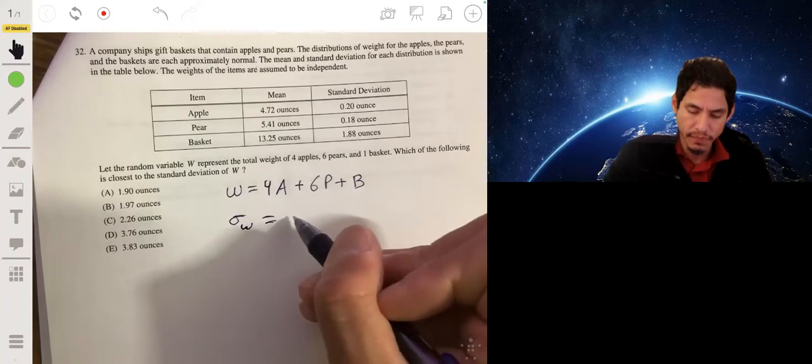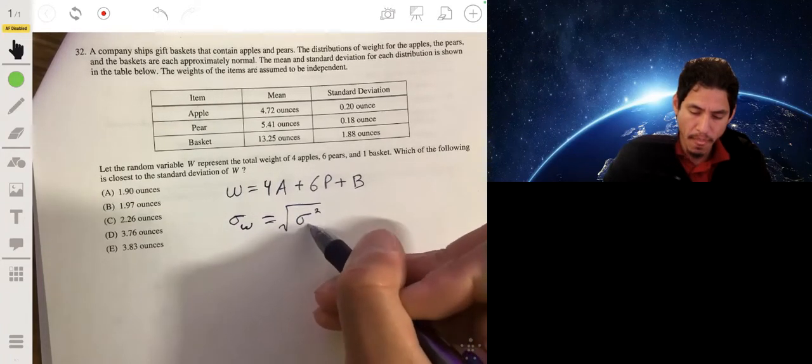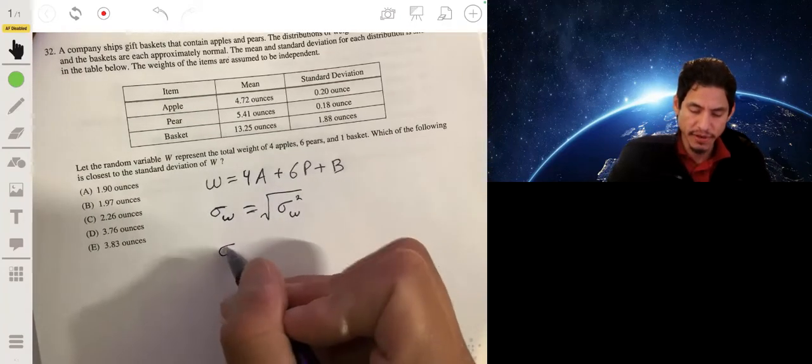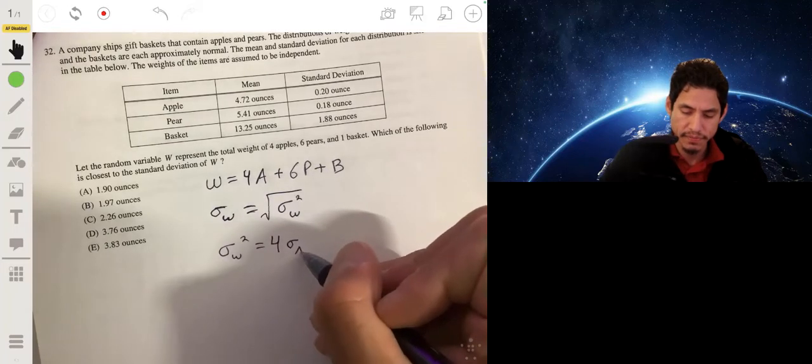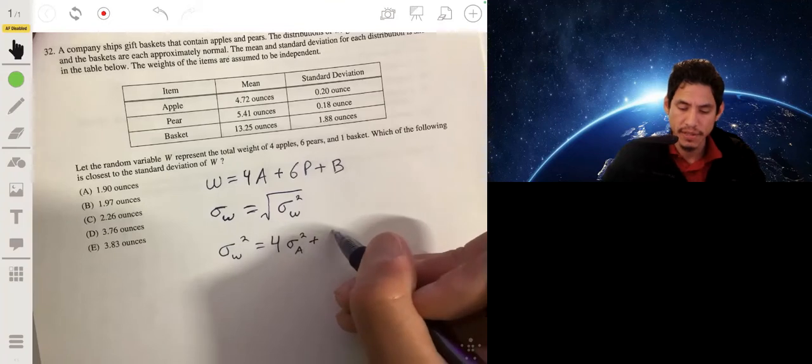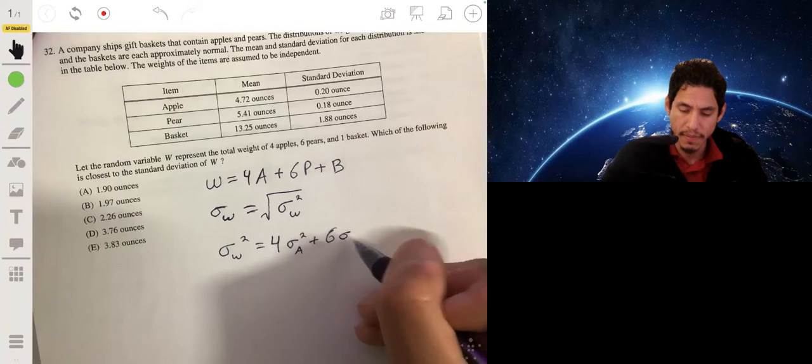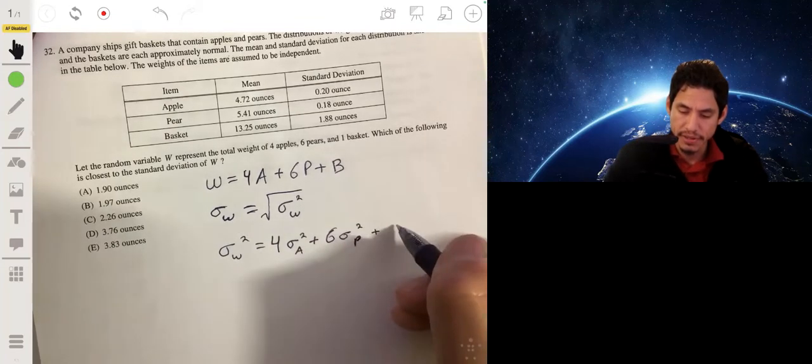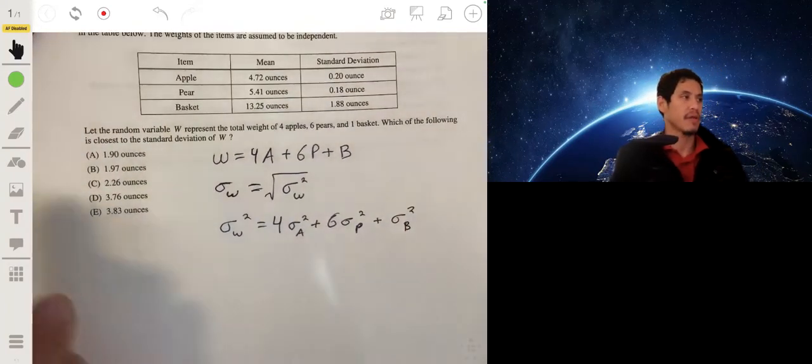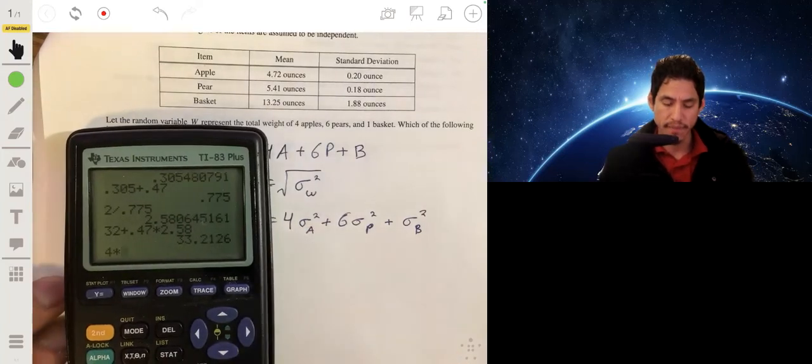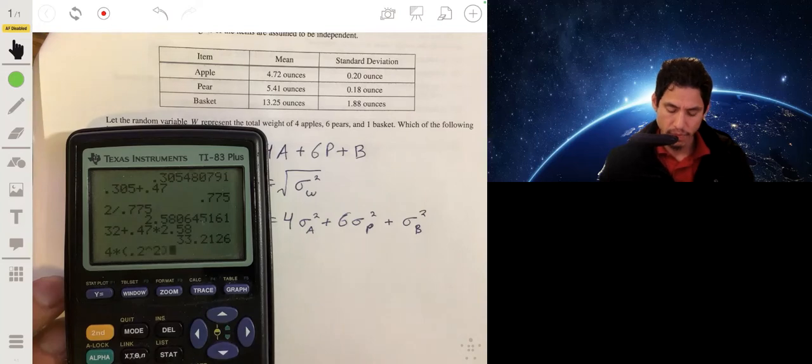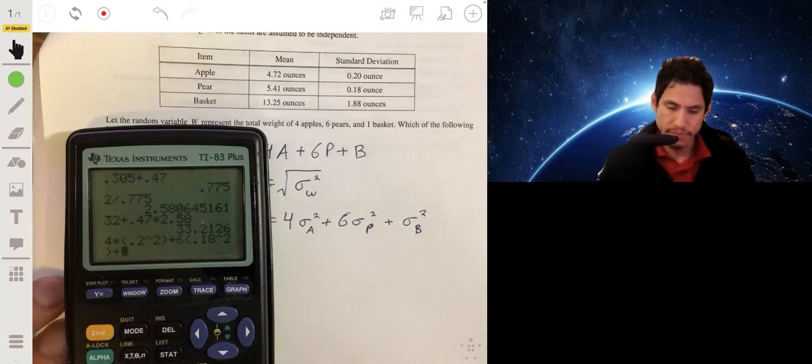So the standard deviation of W, we're going to need to find the variance. The standard deviation is the square root of the variance of W. So let's find that. So the variance of W will be 4 squared times the variance of the apples, plus 6 squared times the variance of the pears, plus the variance of the basket. So let's plug that into our calculator. So we'll get 4 squared times 0.2 squared plus 6 squared times 0.18 squared plus 1.88 squared.